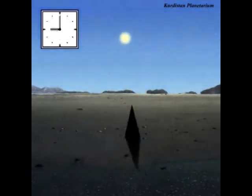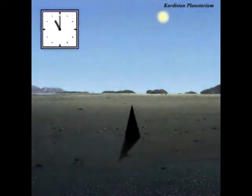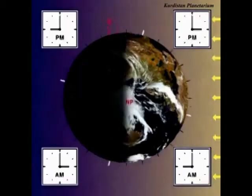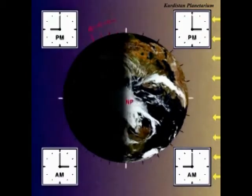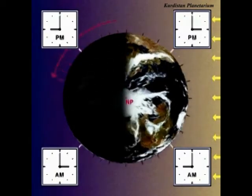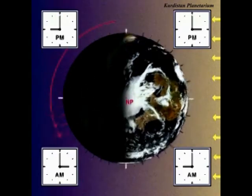Ordinary timekeeping is closely linked to the apparent position of the Sun in the sky. Local time is a kind of solar time. Around midday, the Sun reaches its highest point in the sky. Local time, measured according to the Sun, differs between places at different longitudes.